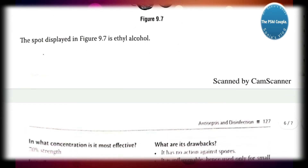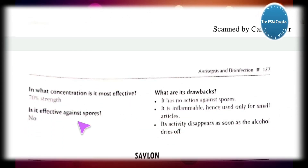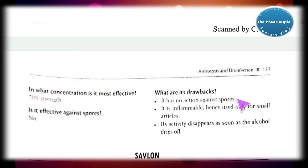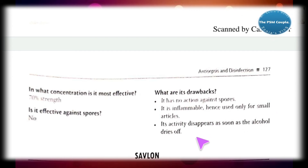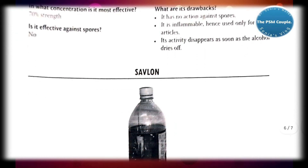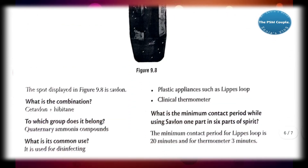Next is ethyl alcohol. At what concentration is it most effective? 70% strength. Is it effective against spores? No. Drawbacks: it has no action against spores, it is inflammable hence used only for small articles, and its activity disappears as soon as the alcohol dries off.